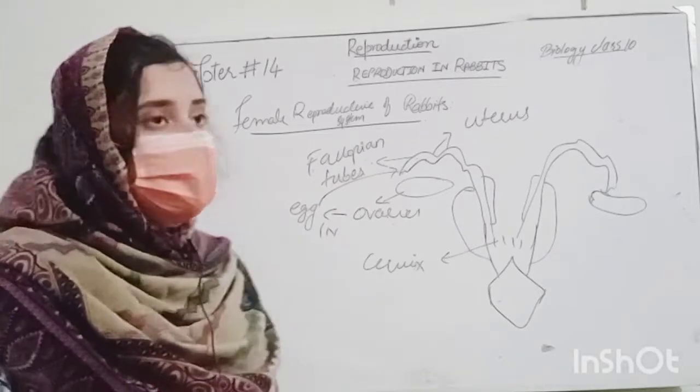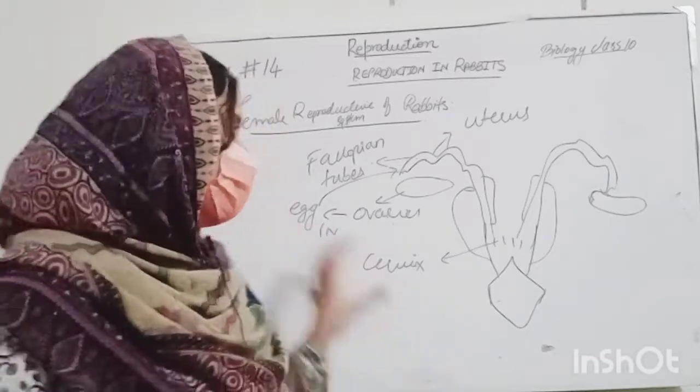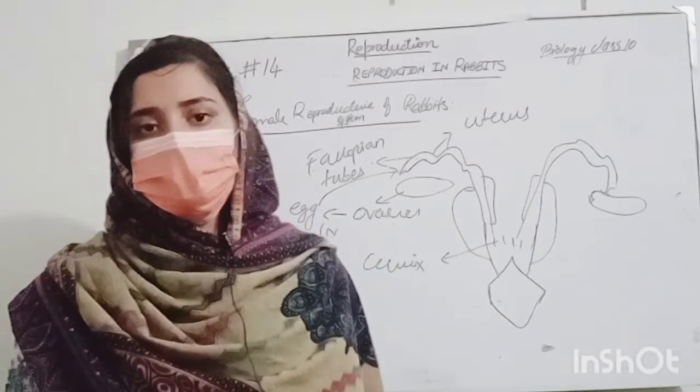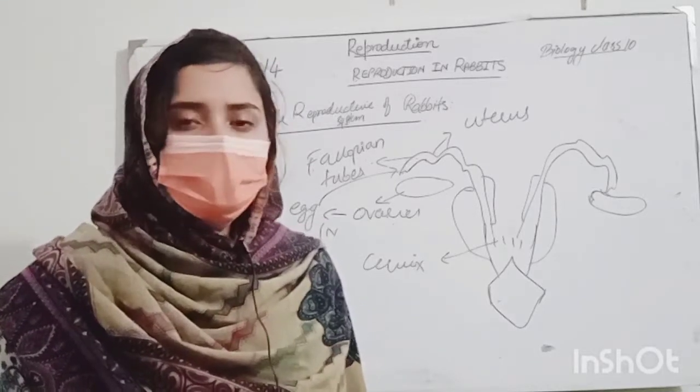So students, the fertilization of rabbits in summer season is sterile but the other season is this fertilization. And in their fertilization is 30 to 32 days after the new offspring will be produced.